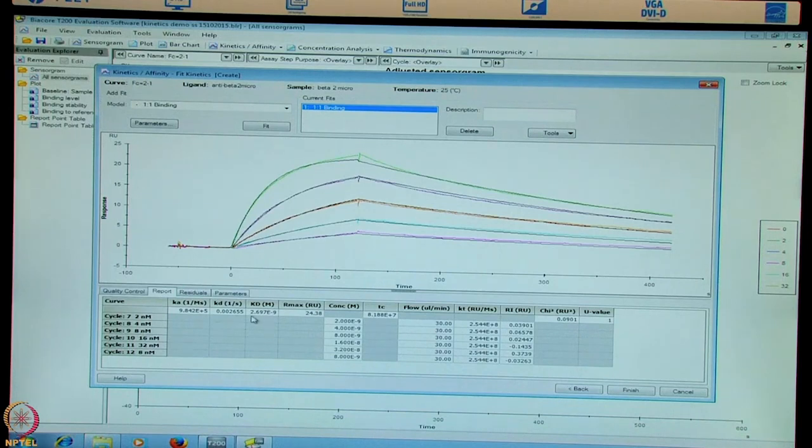So KD refers to the affinity of the two molecules, which is 2.6 × 10^-9 molar or 2.69 nanomolar affinity. Rmax or maximum number of binding sites available at 24. Chi-square of 0.0901 should be below 1 at least. U value below 25 is always considered to be good.